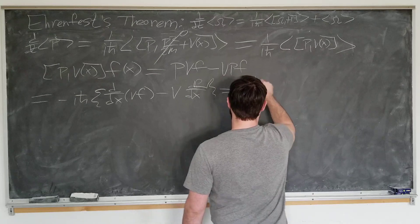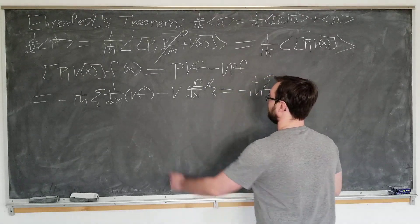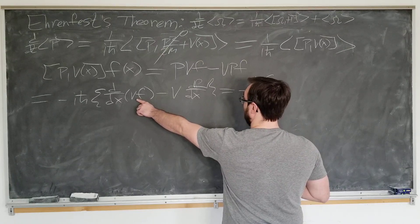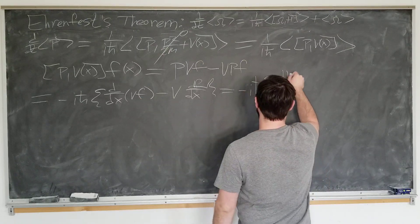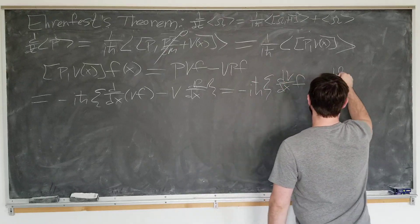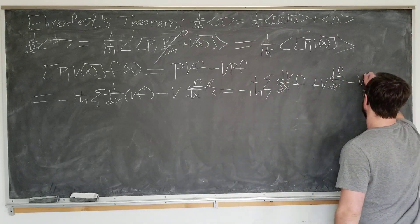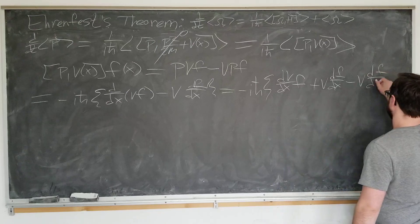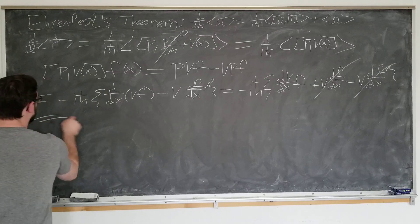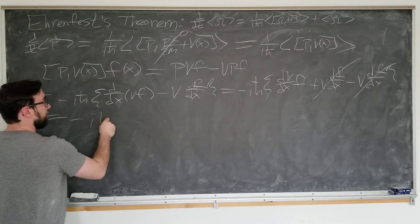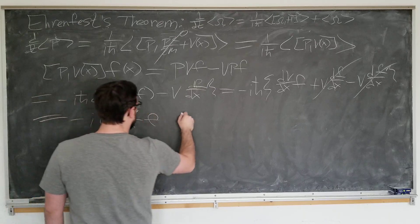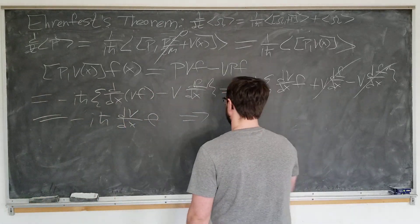This is actually going to be equal to minus i h bar, and we're going to get two terms. First term is dv by dx times f plus v d f by dx minus v d f by dx. These two terms cancel, so this is actually equal to minus i h bar dv by dx f. And now we're done with the test function, so we can drop it.